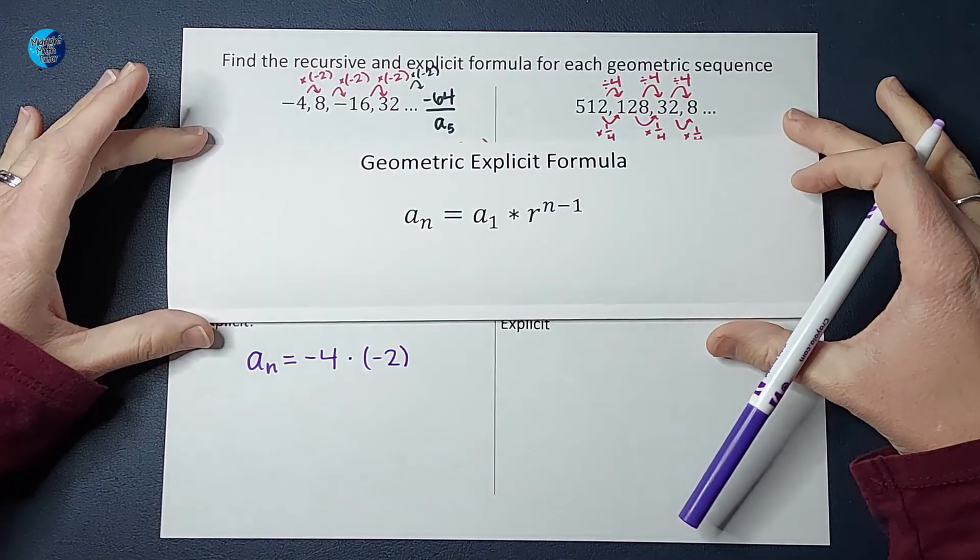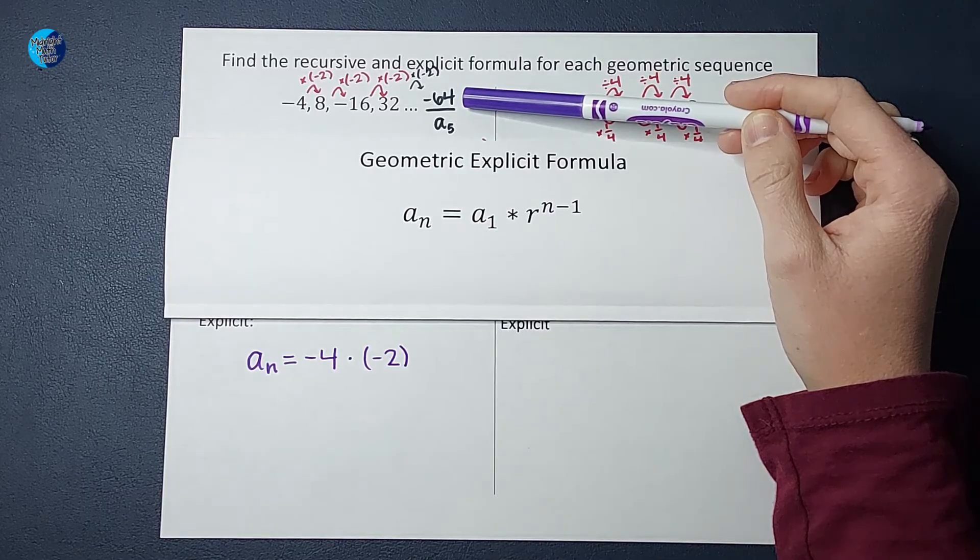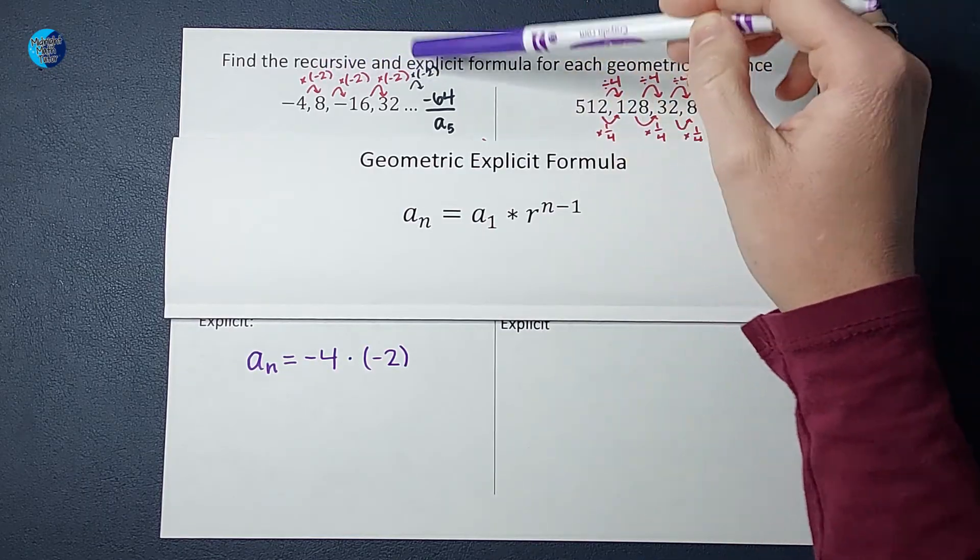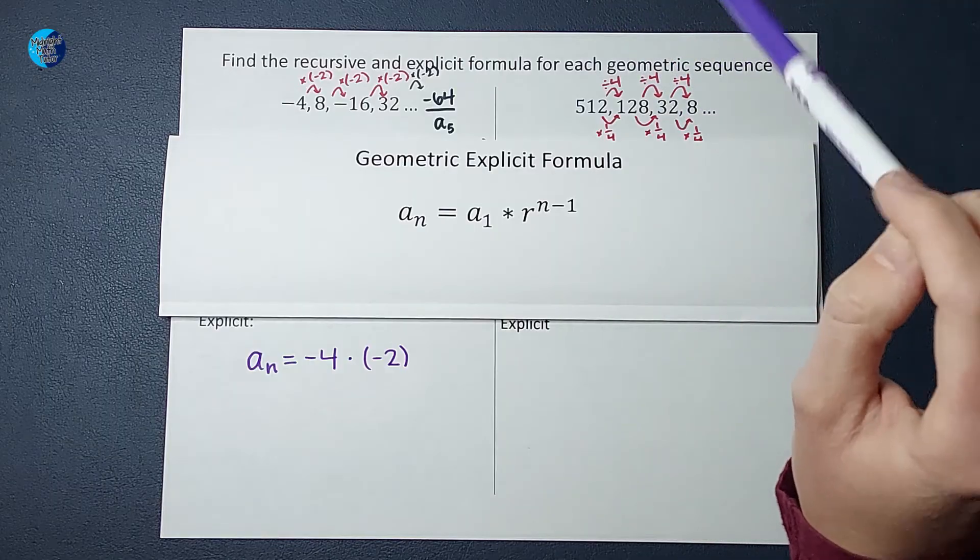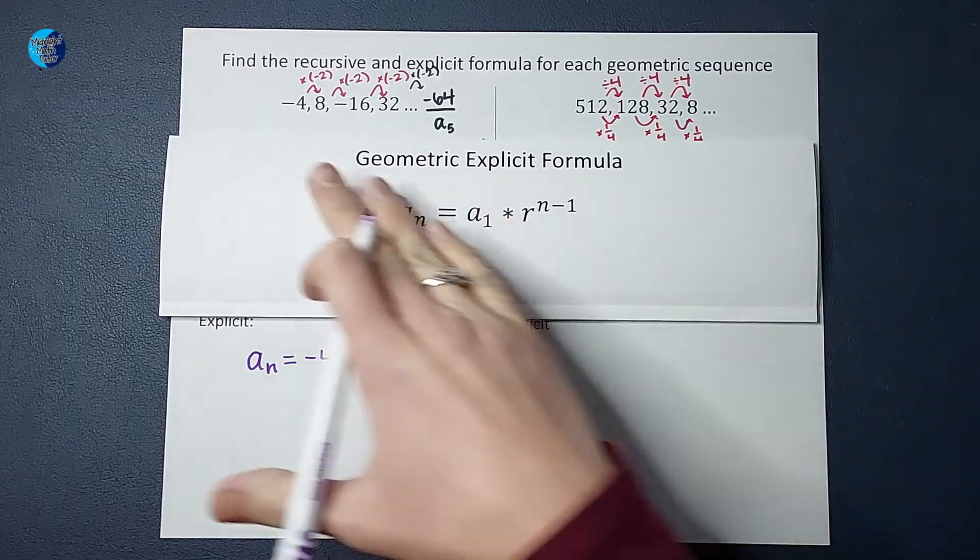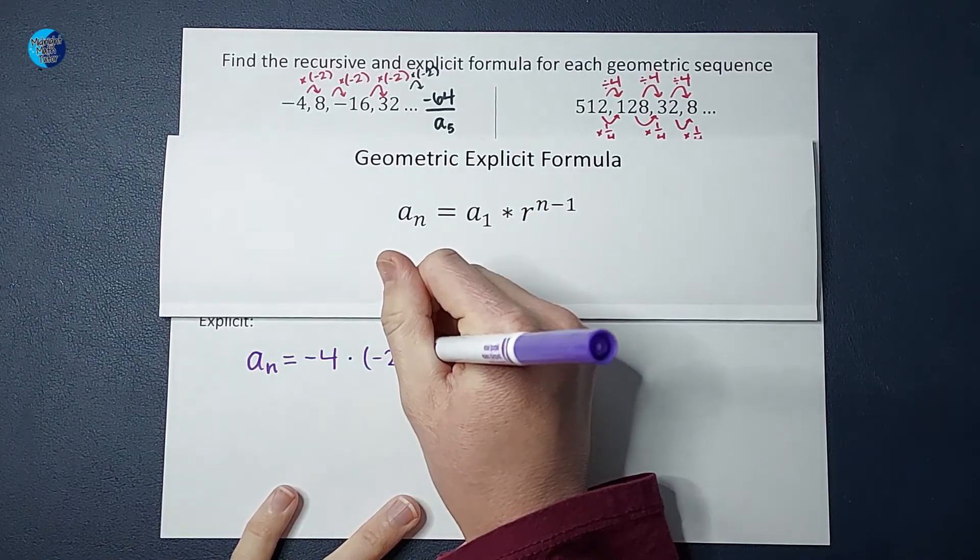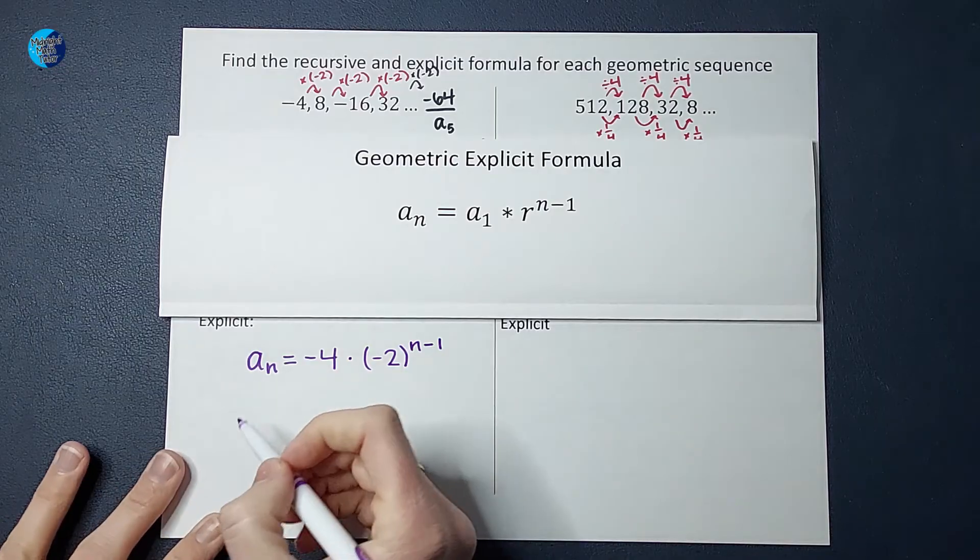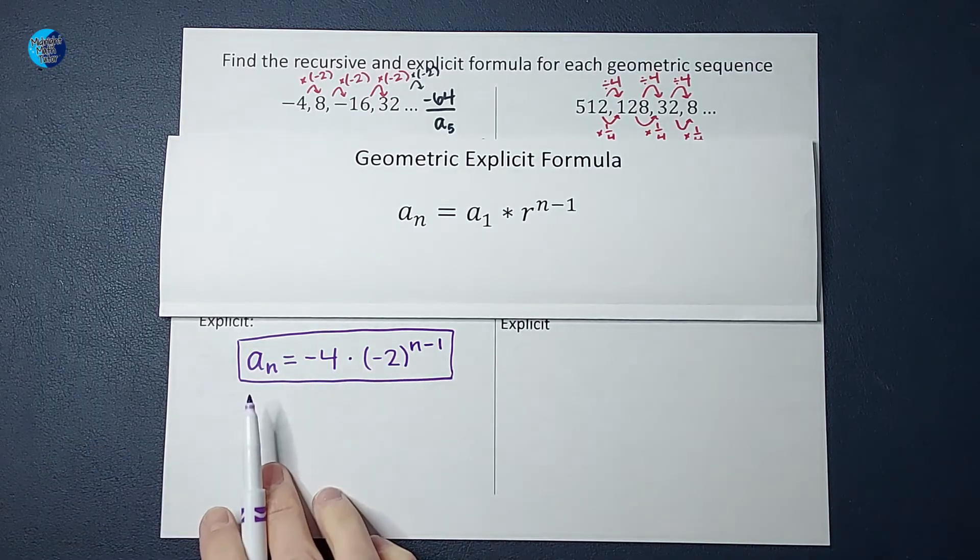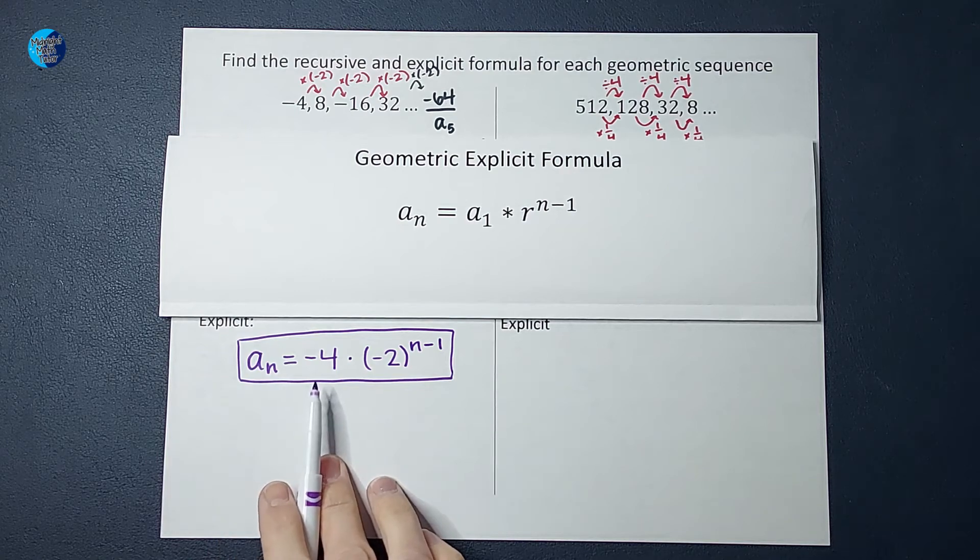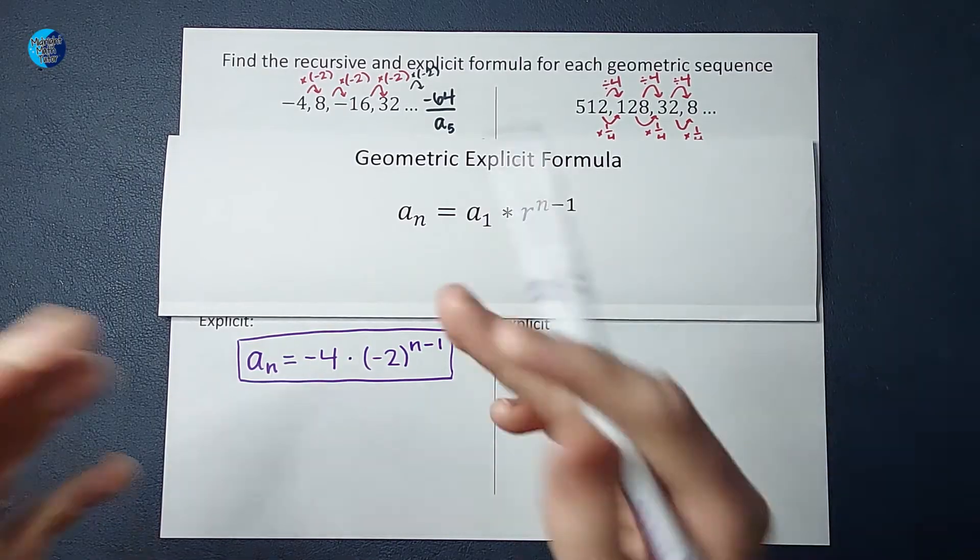I want you to think about why this is N minus 1. When we found the fifth term in our sequence, how many times did we multiply by negative 2? We can count it: 1, 2, 3, 4. When I wanted the fifth term, I multiplied by negative 2 four times, one less time. So if I want to find the hundredth term, I'm going to multiply by negative 2 ninety-nine times. That's why it's N minus 1. Basically what this is saying is whatever number you want to find, you times negative 4 by negative 2, N minus 1 times. You don't have to know the one before it.